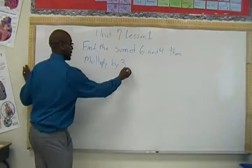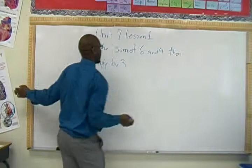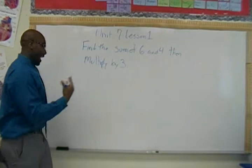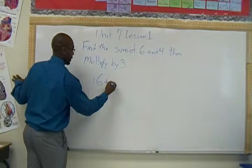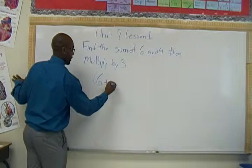We also have to change word form back to numeric. So if it says 'add six and four, then multiply by three,' we know we need to add first and then multiply. To show that we want to add first, we put six plus four in parentheses — that tells people this needs to be done first — and then multiply by three. If you have any problems or concerns, shoot me an email and I'll definitely help you out.